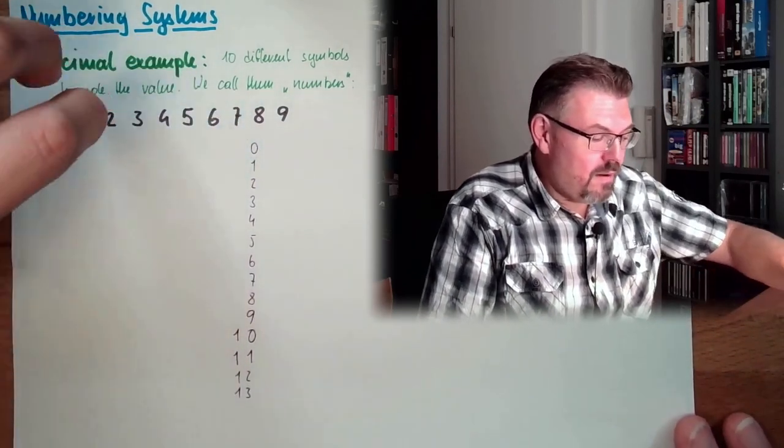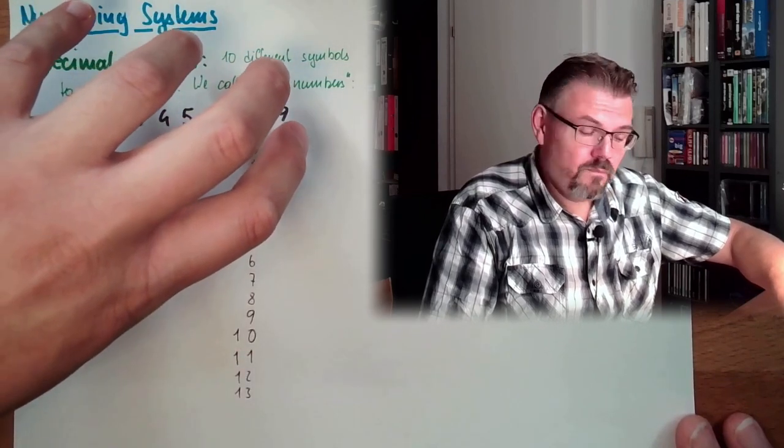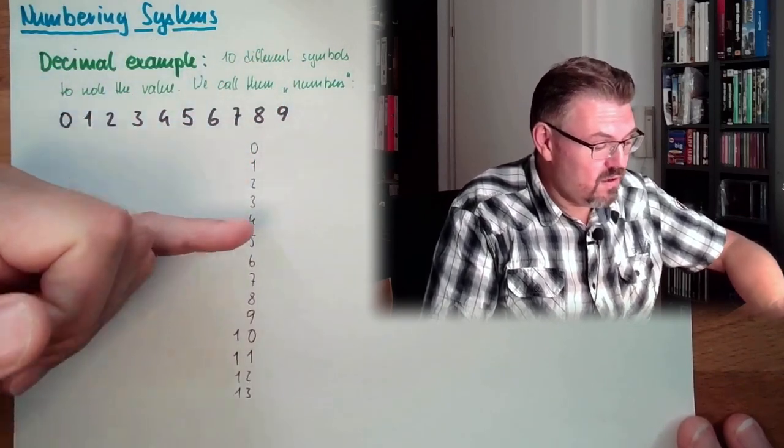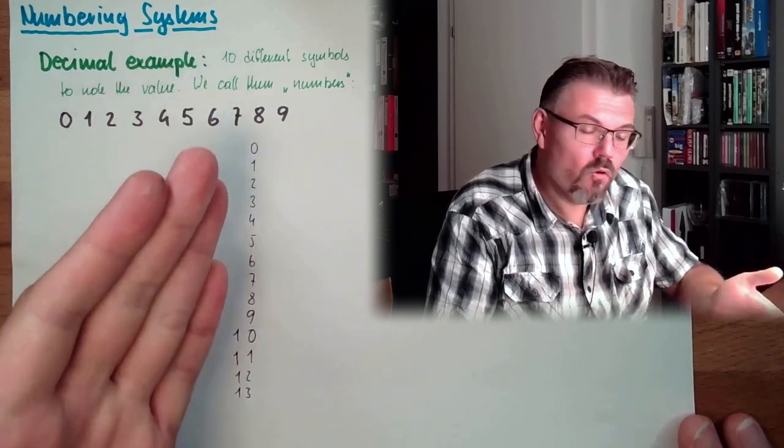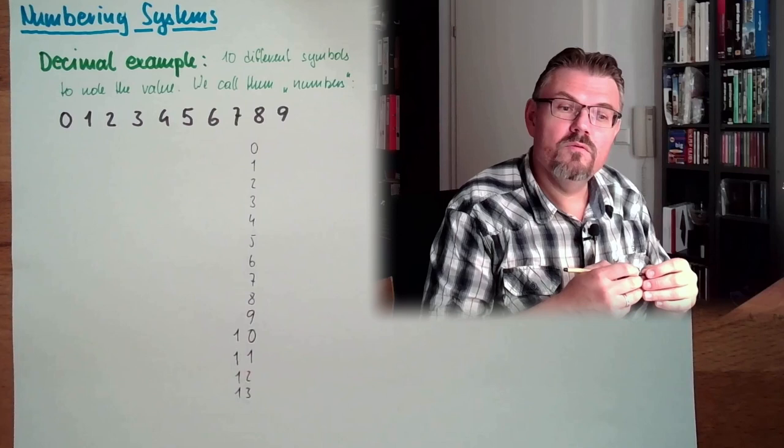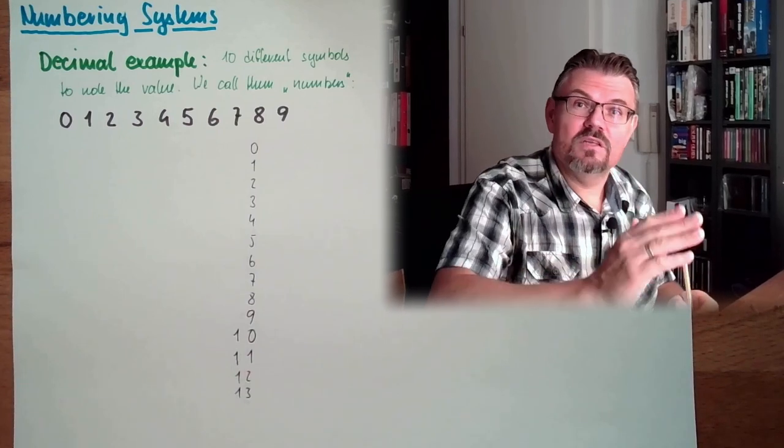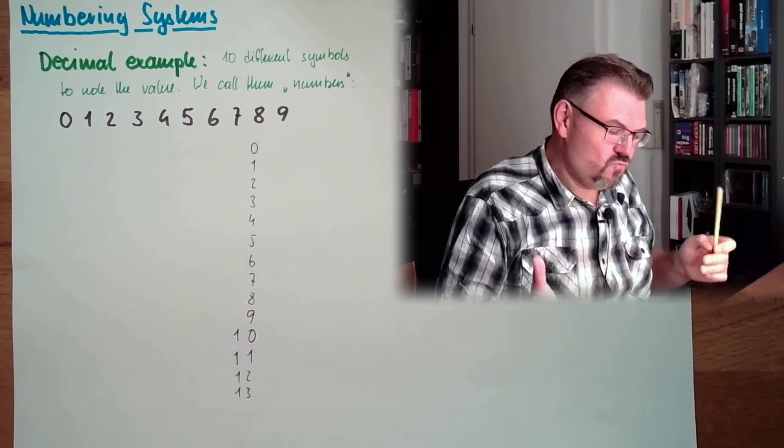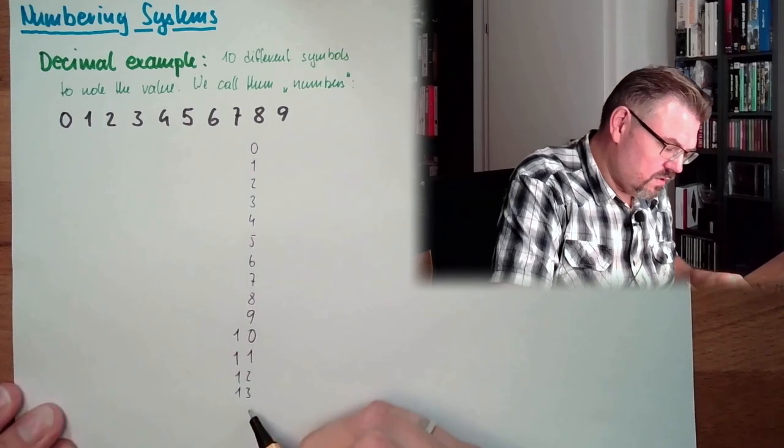We have a bunch of symbols and we have an order of the symbols. And if all symbols are used, we use simply the next digit, which is located to the left. That's the common understanding.